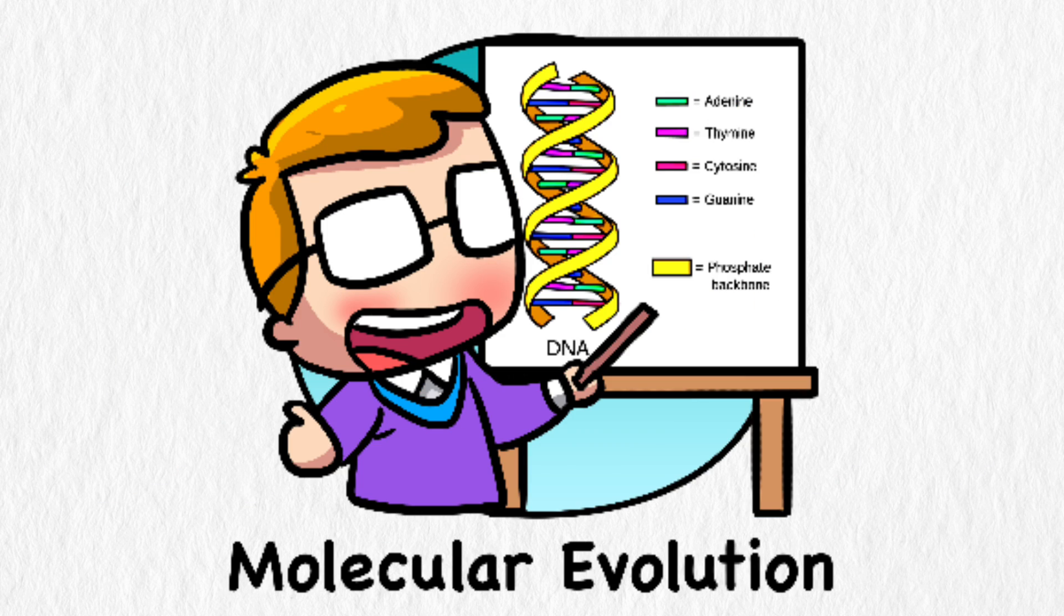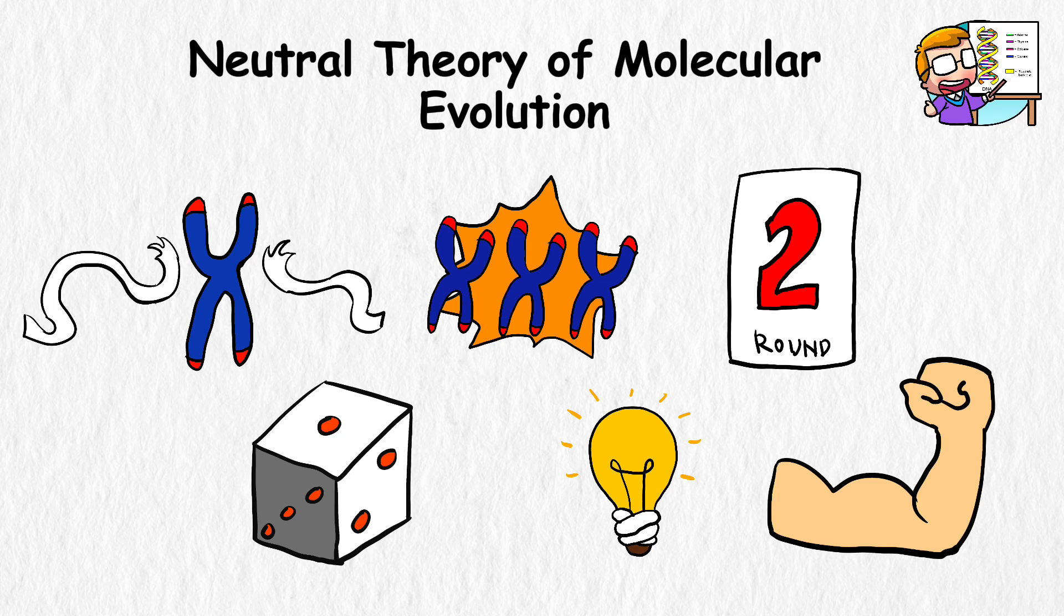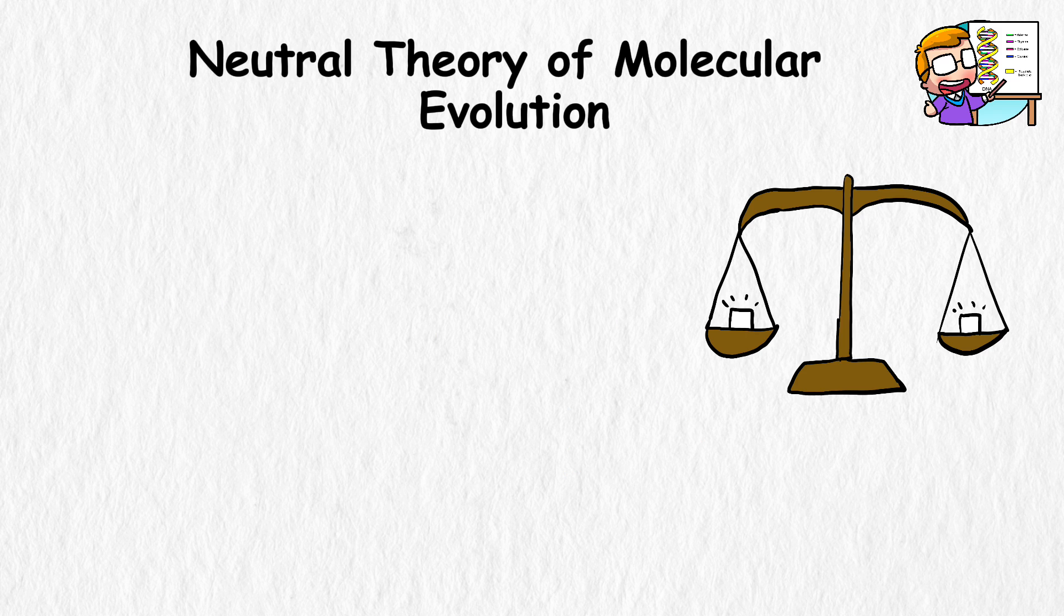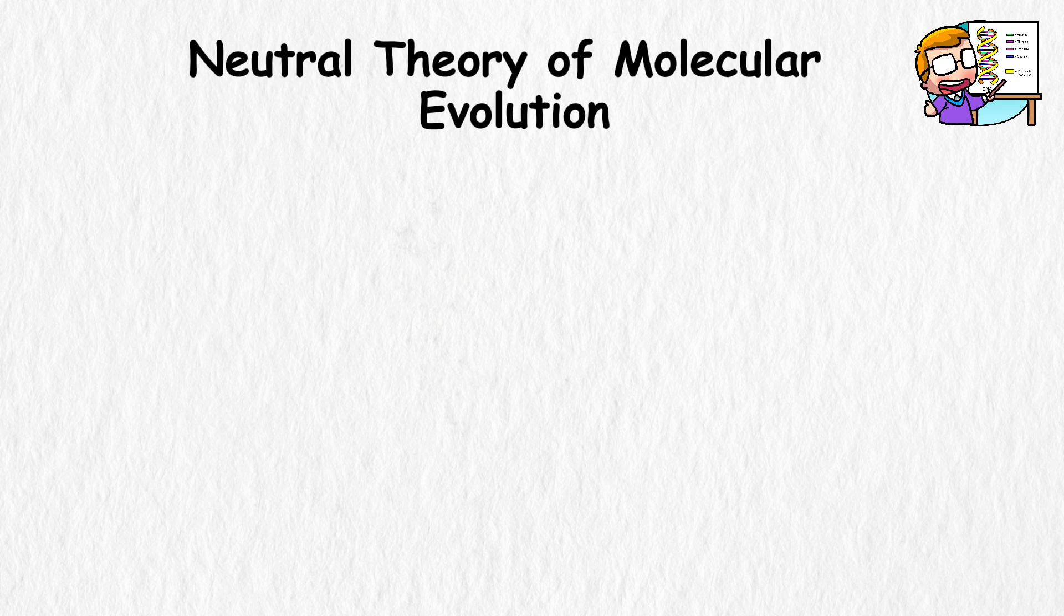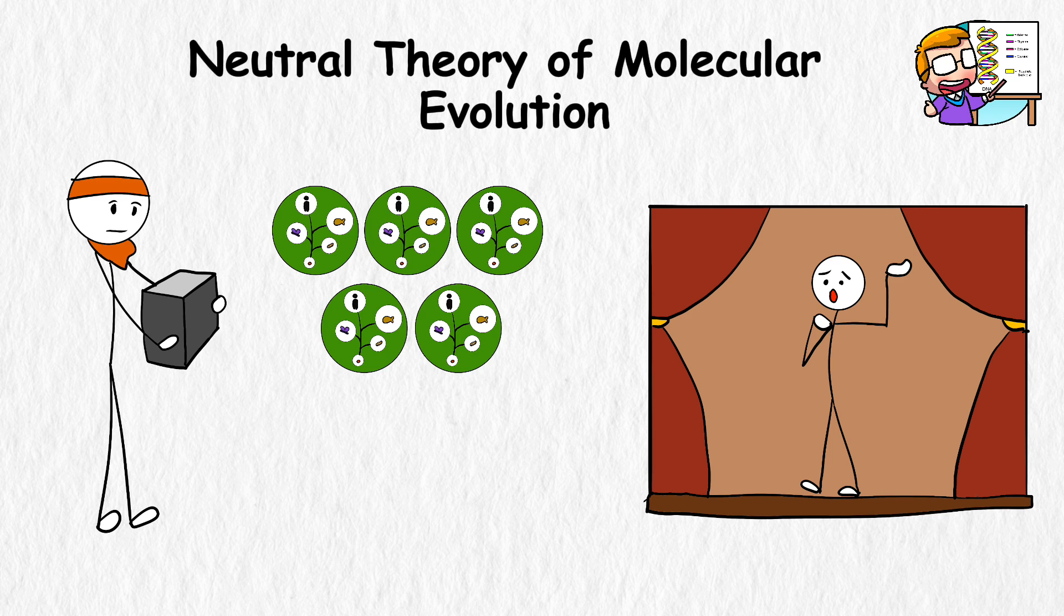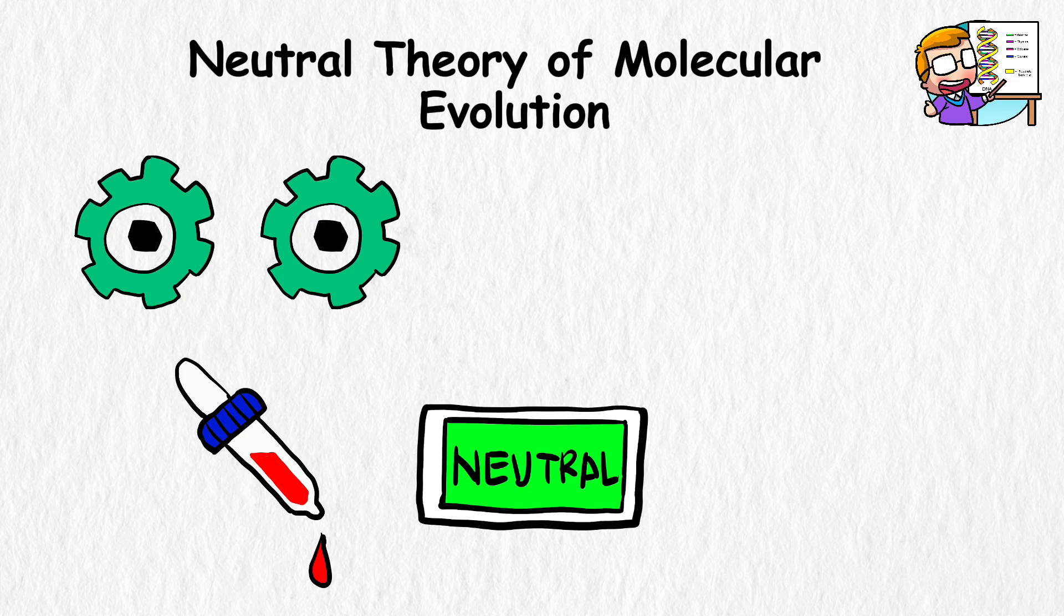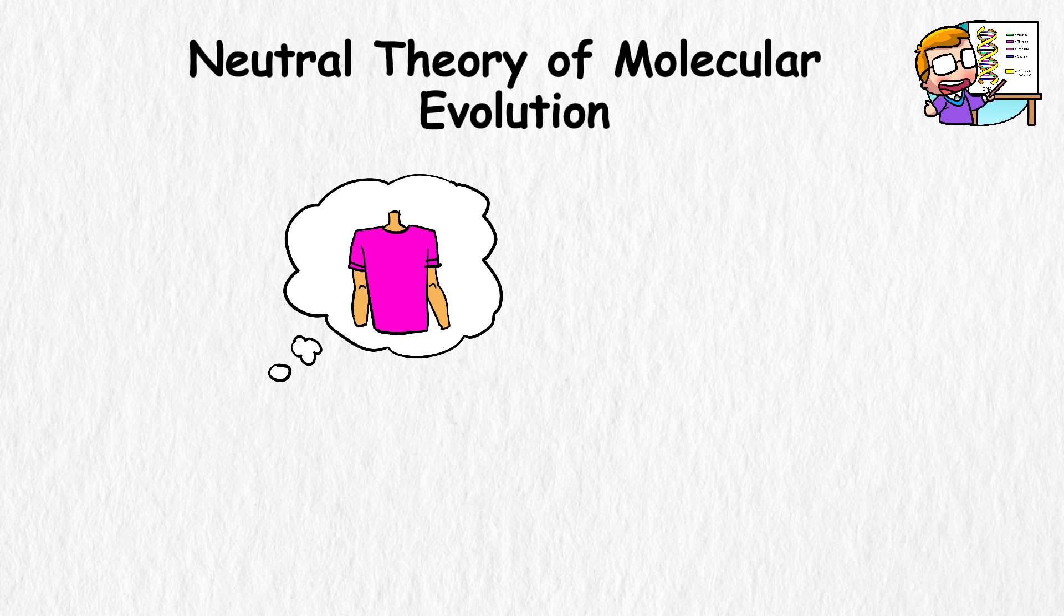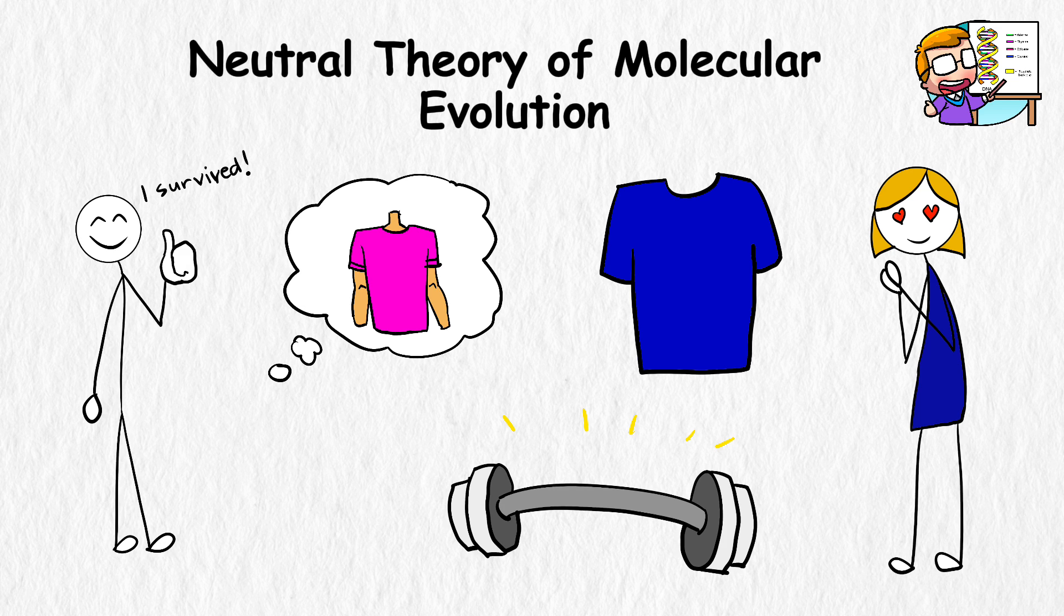Neutral Theory of Molecular Evolution. Consider evolution a game where genes compete to make it to the next round. Now the classic idea is that only the strongest and most advantageous genes make it through, but the neutral theory throws in a plot twist. It says that most of the genetic changes that happen are actually neutral, like backstage workers moving props around rather than the actors on stage. The theory suggests that many mutations don't really impact an organism's ability to survive or reproduce. These changes are, in essence, neutral because they're neither beneficial nor harmful. Imagine you're wearing a pink shirt instead of a blue one. Sure, it might affect whether or not you attract a girl, but it doesn't affect your ability to survive your day. That's what this theory is saying.